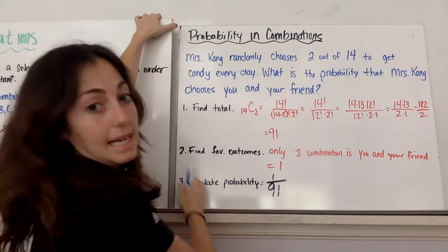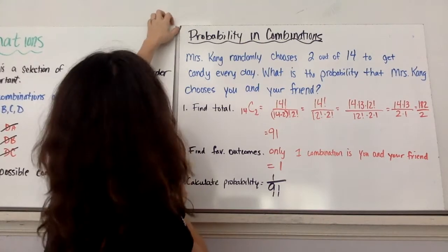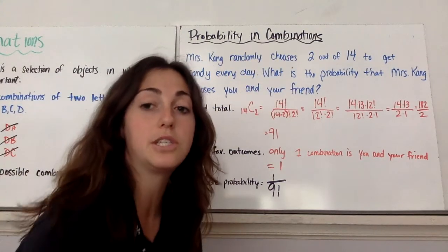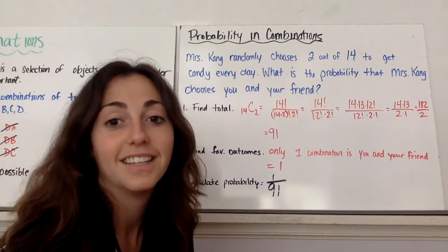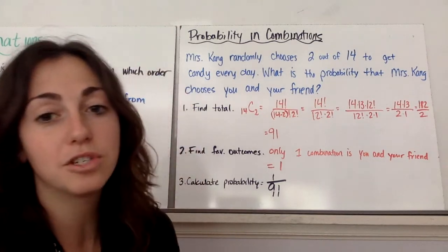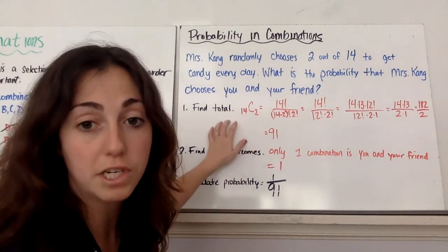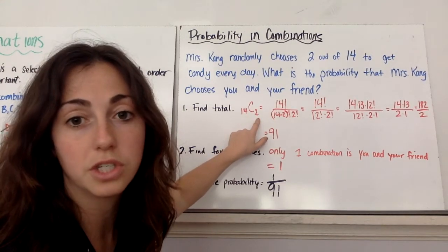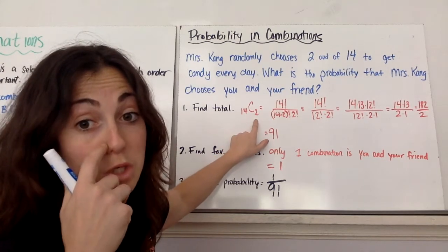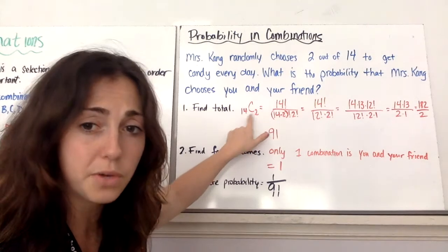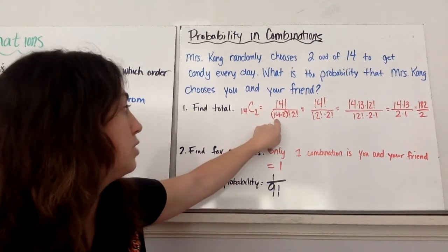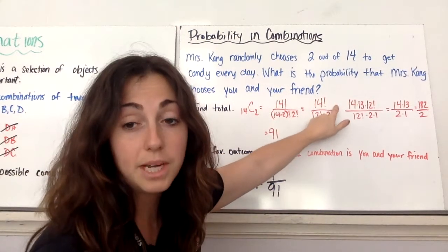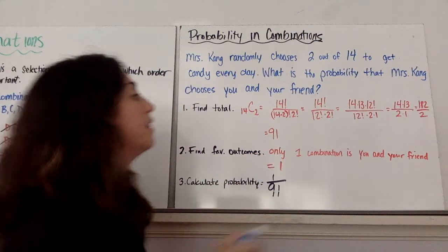All right. Last thing is probability. We've got to throw that in. This whole chapter is about probability. Probability and combinations. So Mrs. Kang randomly chooses 2 out of 14 students to get candy every day. That's nice. What is the probability that Mrs. Kang chooses you and your friend? So the way this works is you first find your total. Your total is the 14 choose 2. The 14 combination 2. 14 choices, 14 objects, choosing 2 of them. 2 because it's you and your friend. So you have 14 factorial over 14 minus 2 factorial times 2 factorial, which is 14 factorial over 12 factorial times 2 factorial, which is 14 times 13 times 12 factorial. Then these will cancel.